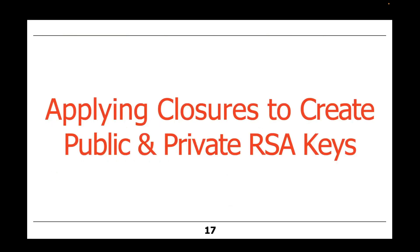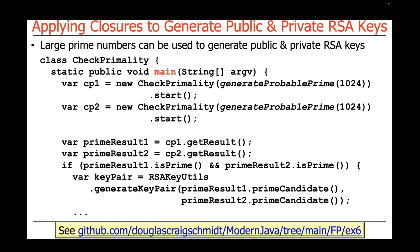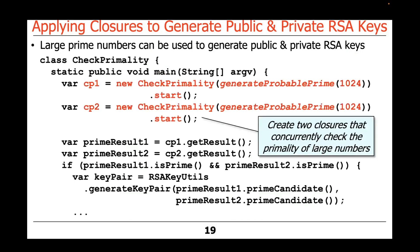Given this simple example, we're going to apply these closures to create public and private RSA keys. RSA keys work by manipulating very large prime numbers. We're going to create and start two CheckPrimality objects — the closures we talked about — passing in a parameter called generateProbablePrime, which generates a very large probable prime number. We're then going to check the primality of each in a separate background thread — one for each of the two prime numbers we're generating.